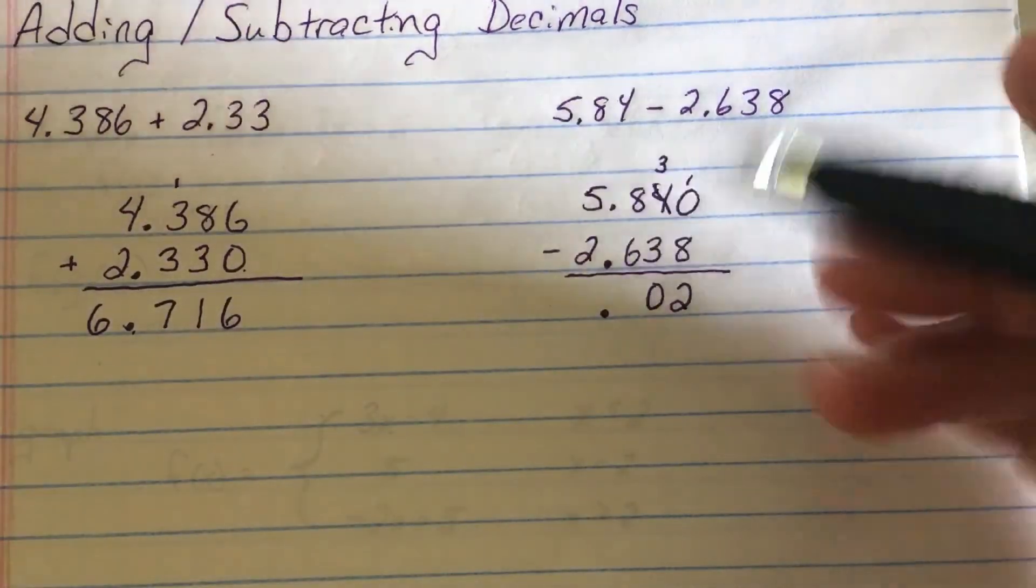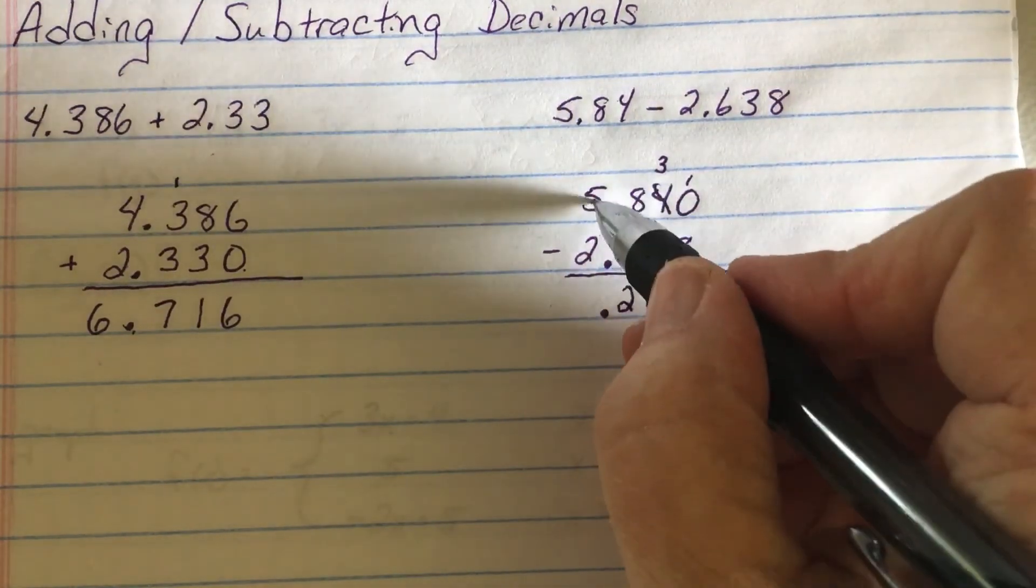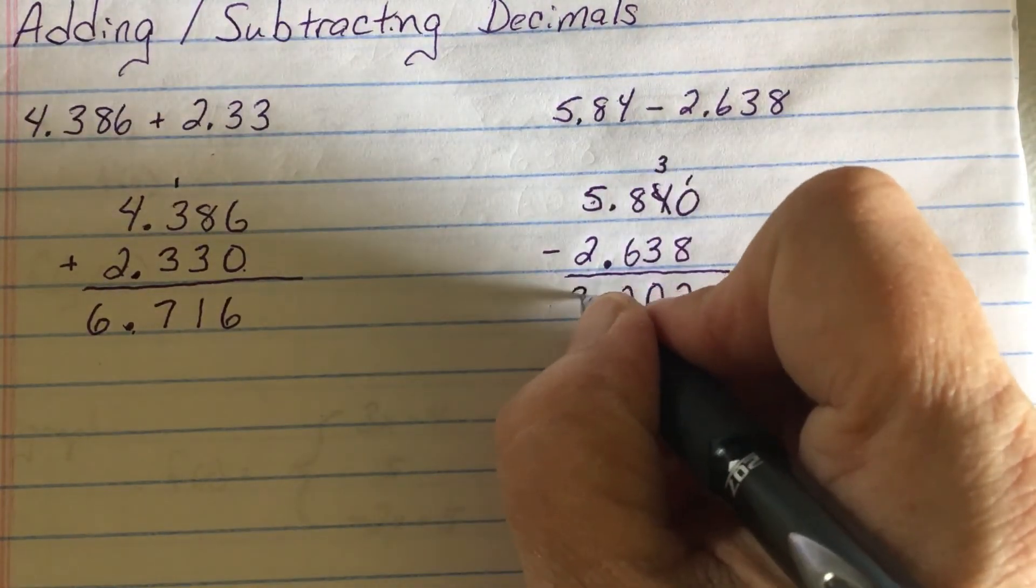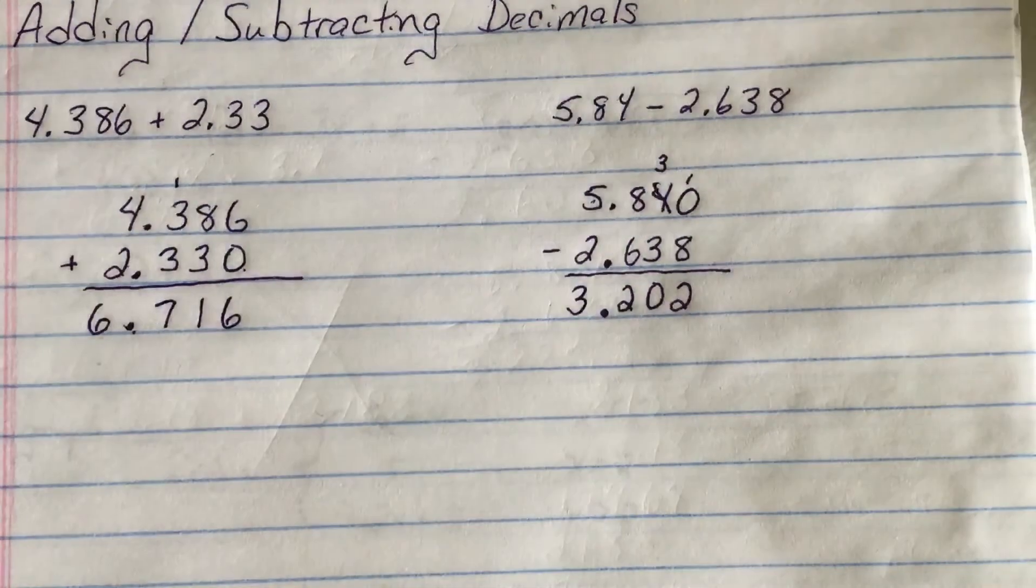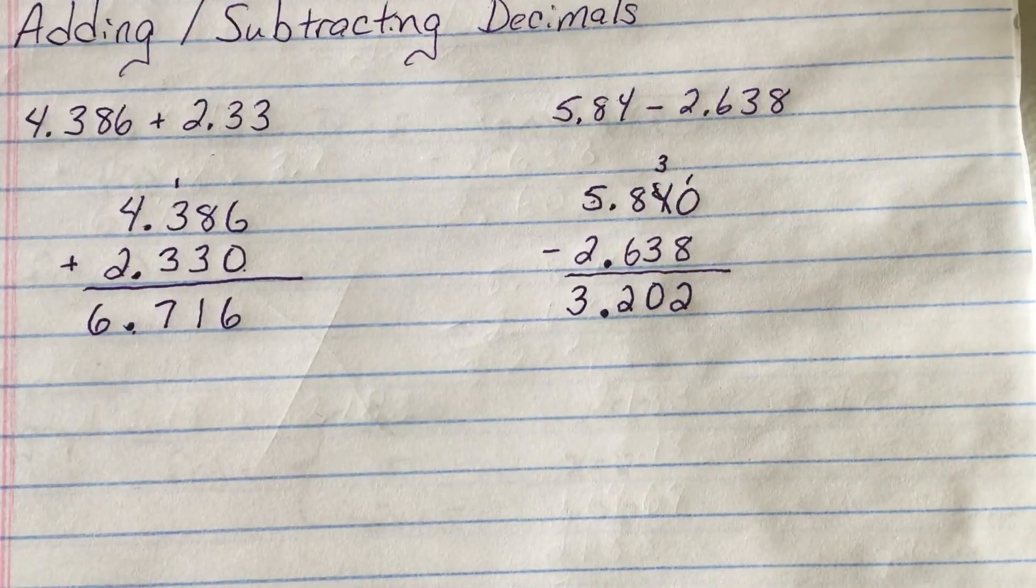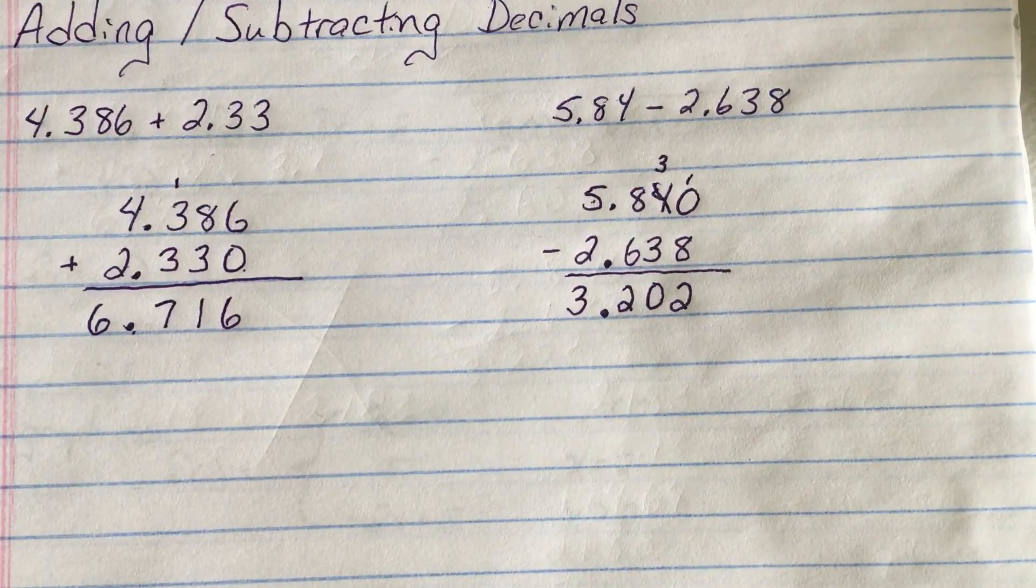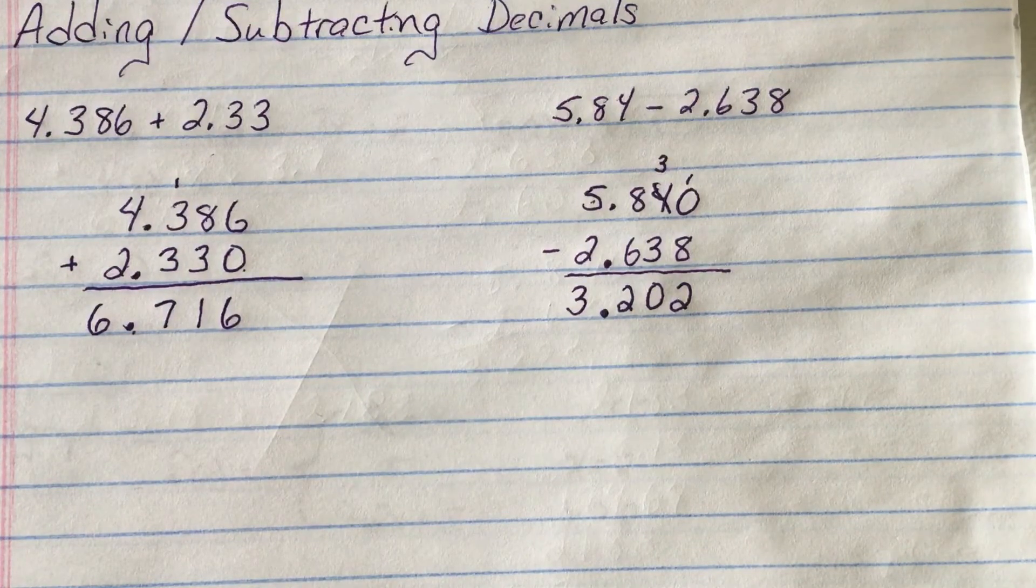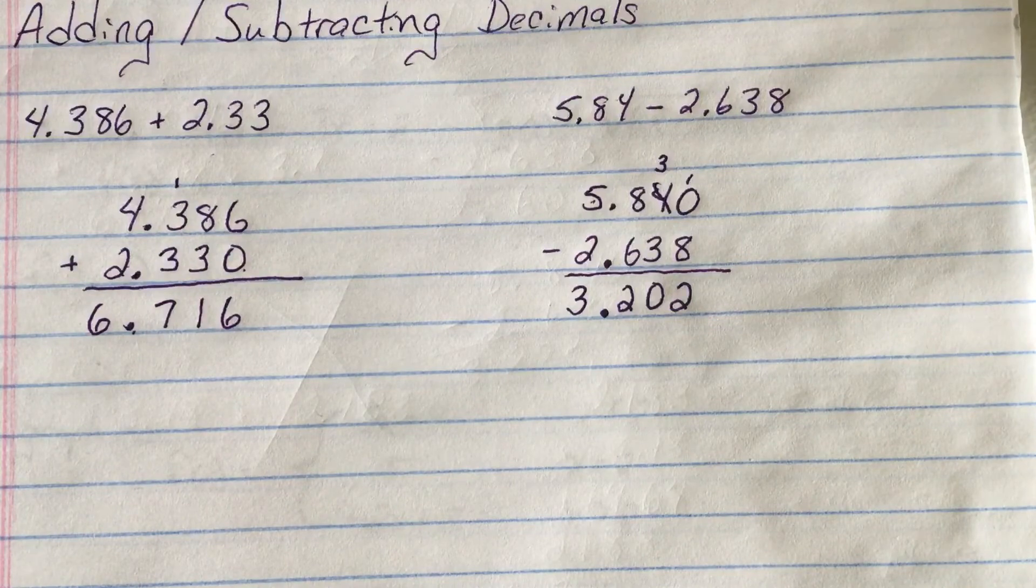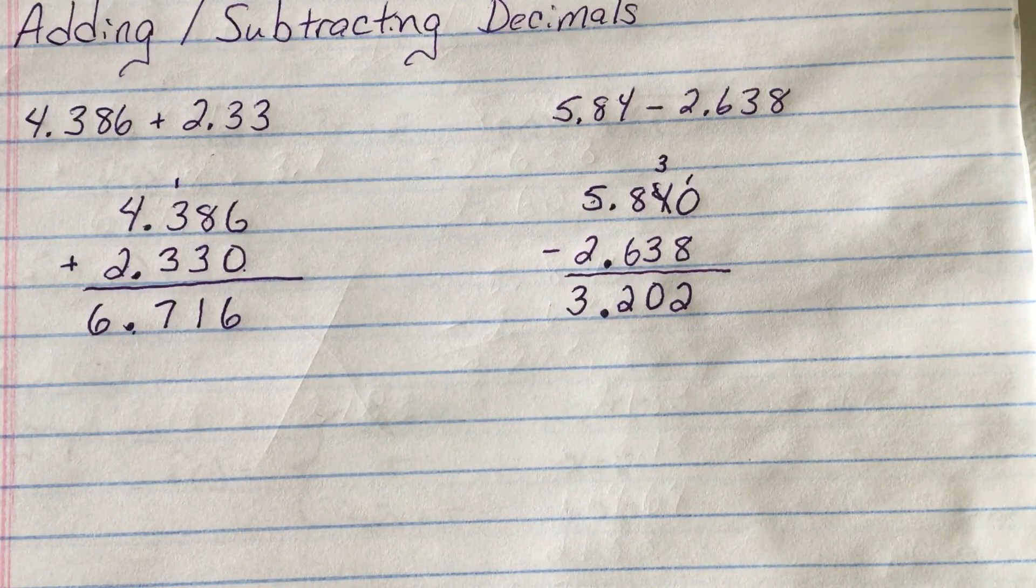Eight minus six is two. Five minus two is three. So five point eight four minus two point six three eight. The final answer is three point two zero two. All right. That is adding and subtracting of decimals.